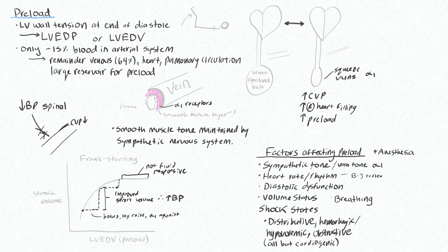There are lots of factors that affect preload. We've talked about sympathetic tone and vascular tone mediated by alpha-1 receptors. Heart rate and rhythm also affect the amount of time you spend in diastole — you need adequate time in diastole to fill the left ventricle. Tachycardia will lower your preload, and bradycardia will increase your preload. Any arrhythmia will also affect the normal filling patterns of the left ventricle.